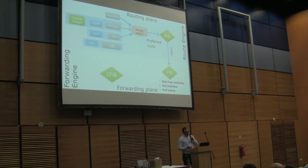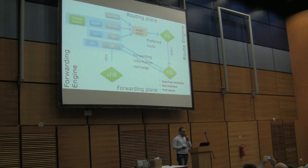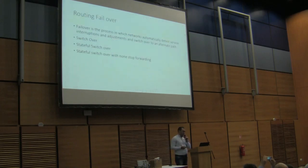For the LDB — Label Distribution Base — certain FIB entries are exchanged with the LDB and then updated to the Label Forwarding Information Base. This is for MPLS.